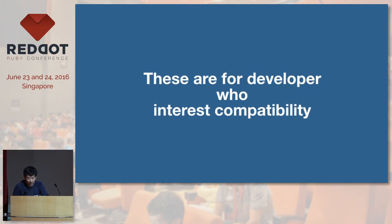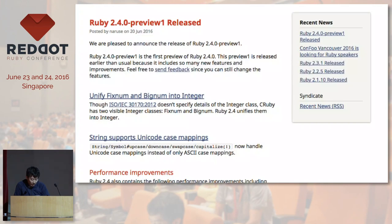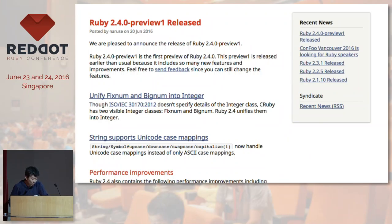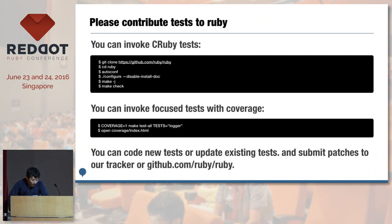We welcome new tests for Ruby 2.3 and 2.4. We released Ruby 2.4 preview one this Monday. There will be some breaking changes in Ruby 2.4 — for example, unification of integers and Unicode case mappings, and more. If you have a gem library, please test it with Ruby 2.4 and report any serious issues to our tracker. If you have any issues with the Ruby language, please run the tests, write a test, and submit it to our tracker.